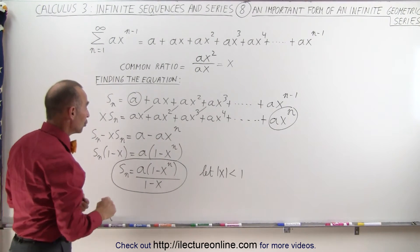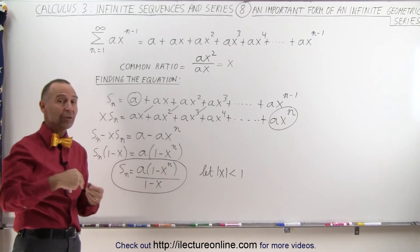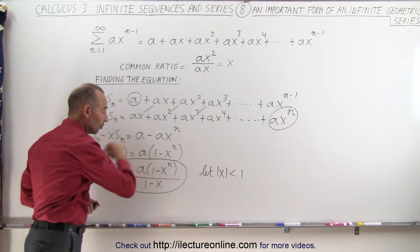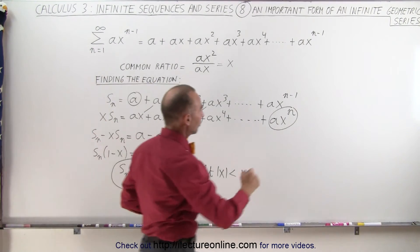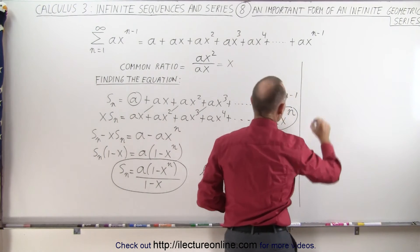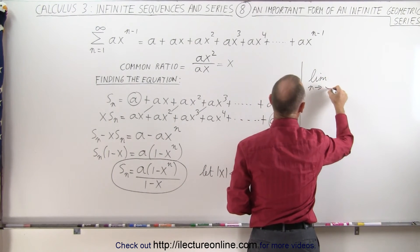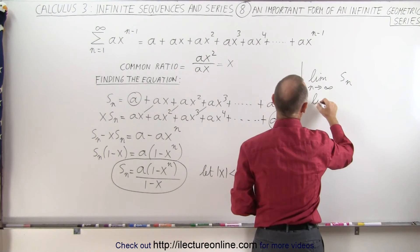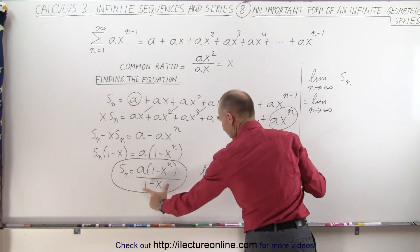And if that's true, then x to the n power, if a number smaller than 1 is raised to the n power as n goes to infinity, this term will actually go to 0, and then we'll simplify the equation. If I take the limit as n approaches infinity of s sub n, that will be equal to the limit as n approaches infinity of this quantity right here.